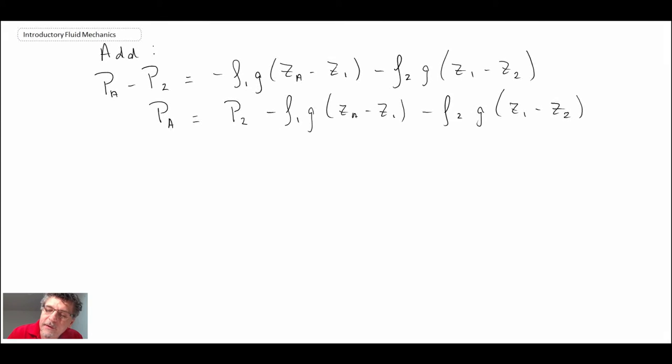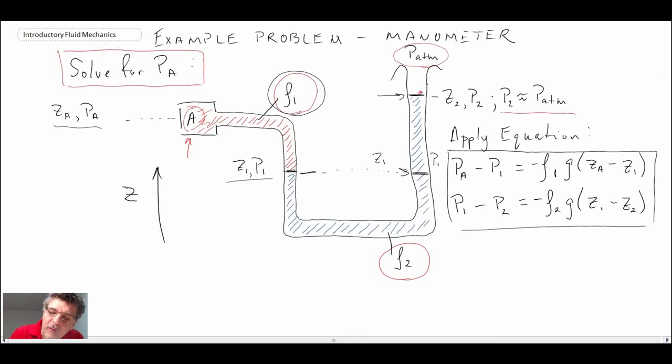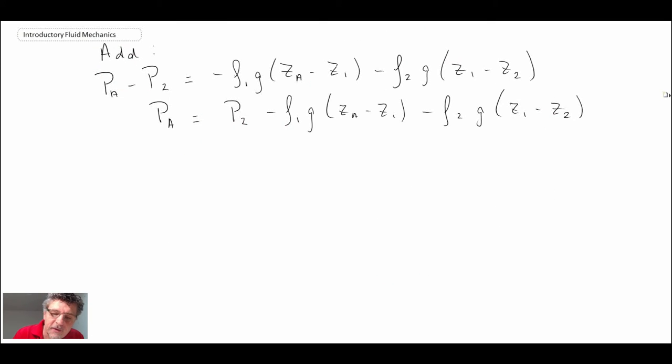If you recall, let's look back on our schematic. We said that P₂ was approximately atmospheric pressure. So we can write the pressure at A, which is the area that we're trying to measure, is equal to P atmosphere.